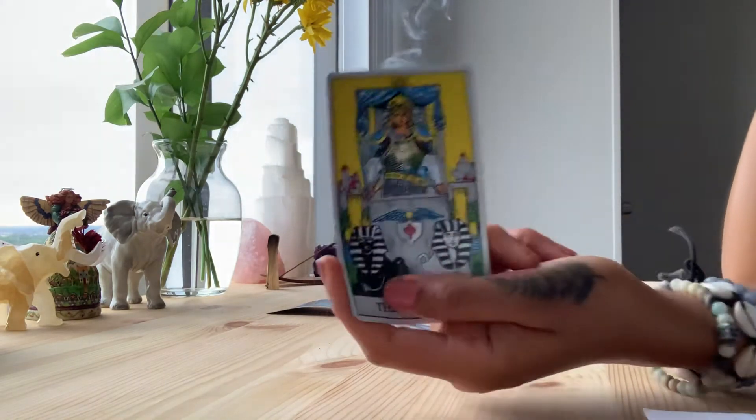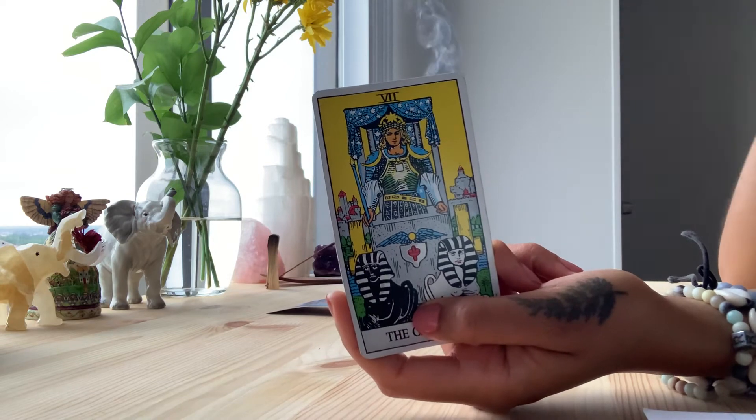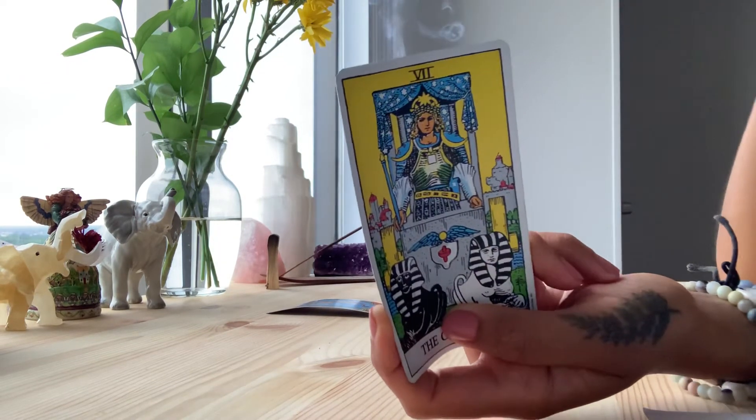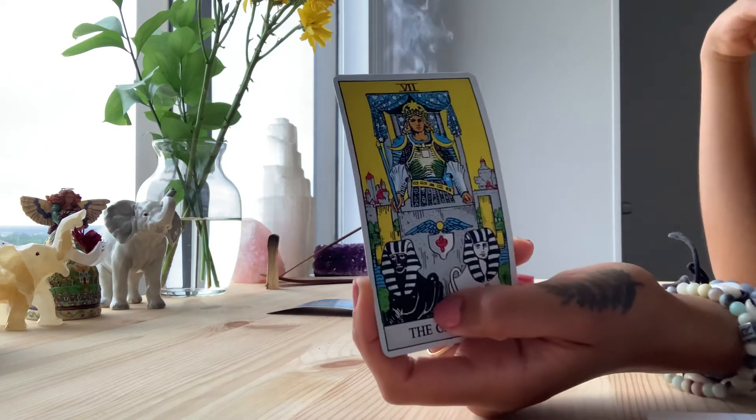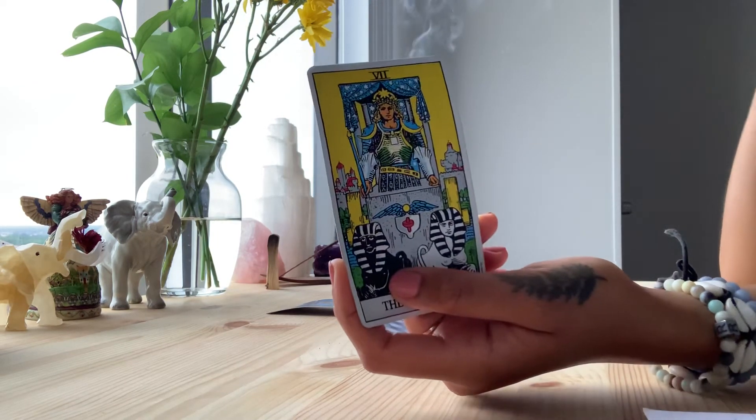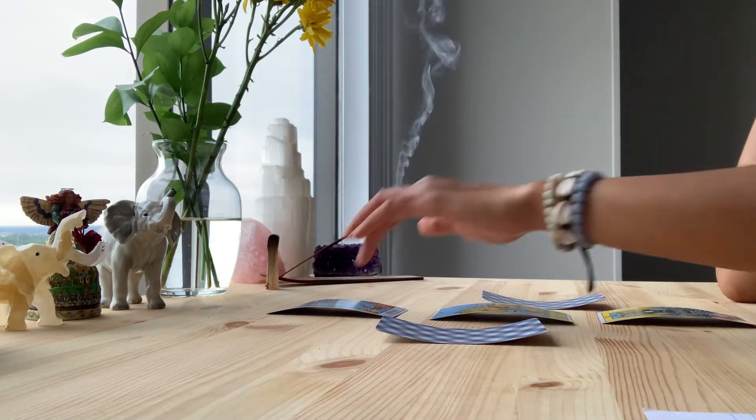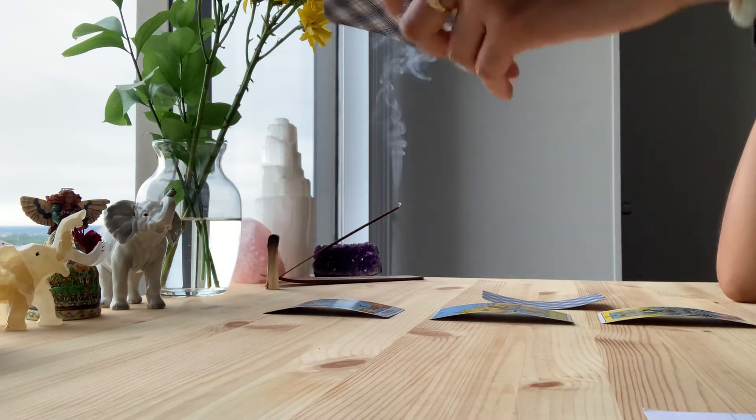The Chariot. Someone's coming towards you. I just saw 444 when I was here, that's why I stopped saying Libra. Somebody's coming towards you with this love offer from the world.